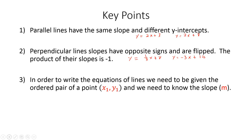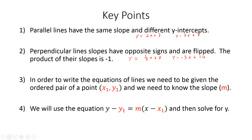Now we're going to look at writing the equations of lines when we're given a point on the line and we identify the slope from a given line. What we need is a point and the slope — labeled x1, y1, and m. We're going to use the point-slope form: y minus y1 equals m times x minus x1. As long as we have a given point and the slope, we can replace x1, y1, and m in that formula and solve for y to get slope-intercept form. Pause here if you want to write that down.